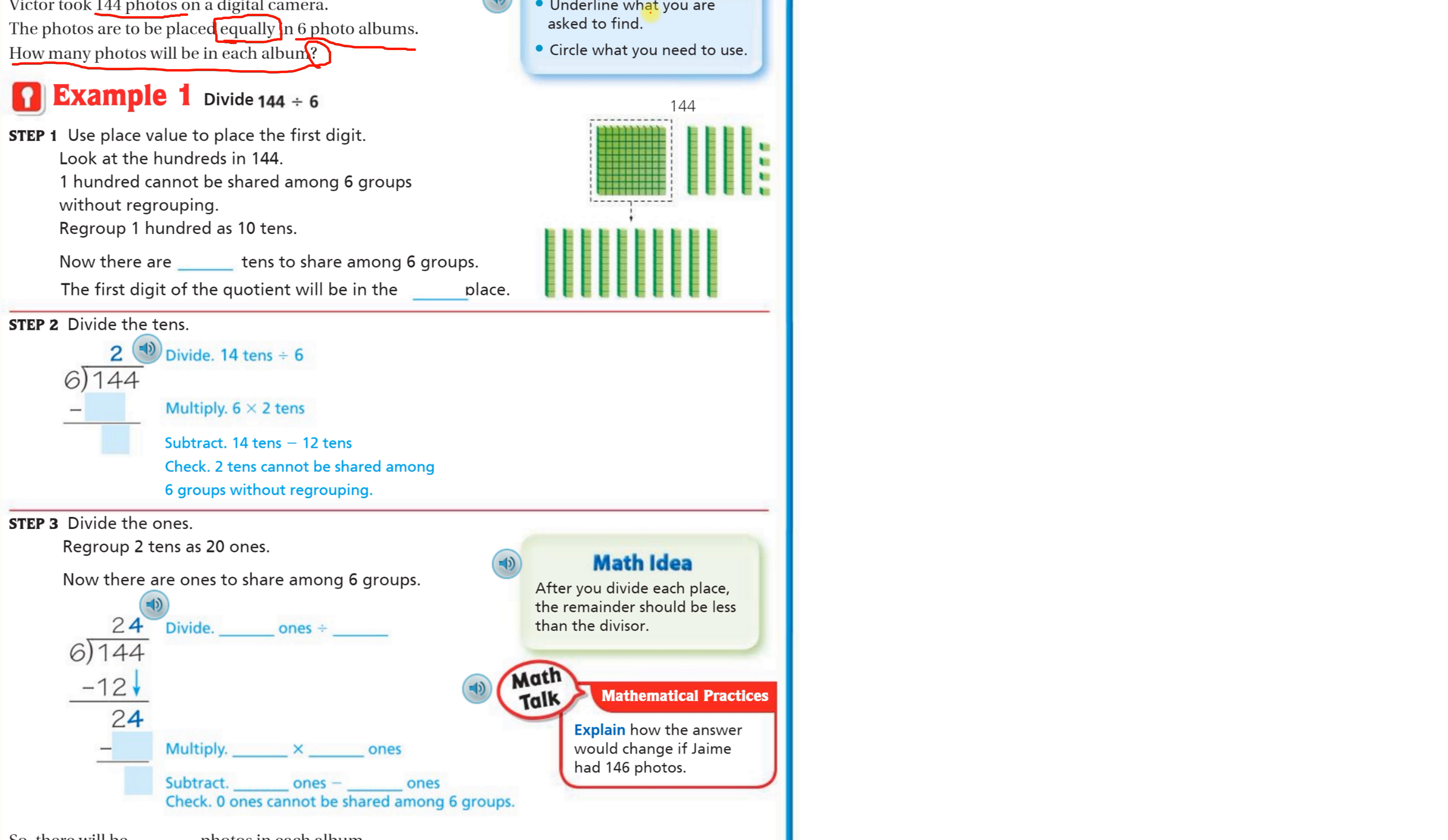So we could do a lot of different things. We could think of this as six albums. I could draw a picture to represent those six albums. This is probably the most favorite method that most students like to use. Draw my six albums, distribute those 144 photos throughout. But there are other ways to do this and ways to do it faster and more efficiently.